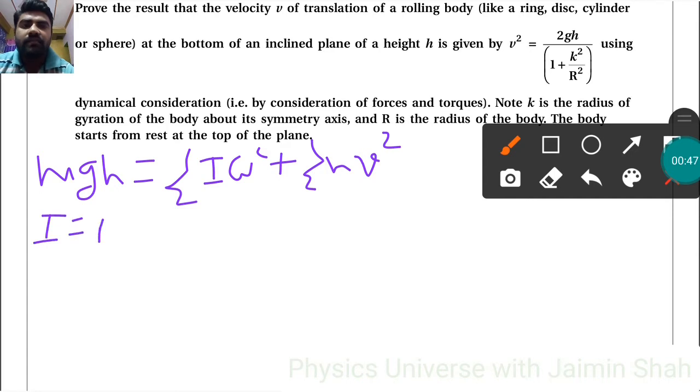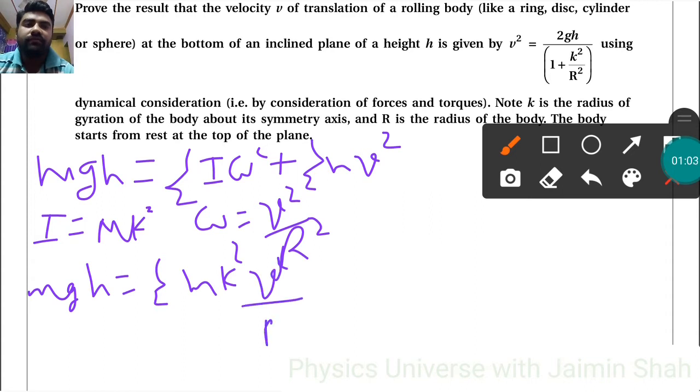I = mk² and ω = v/r. So mgh = ½mk²(v²/r²) + ½mv². The m's get cancelled out.